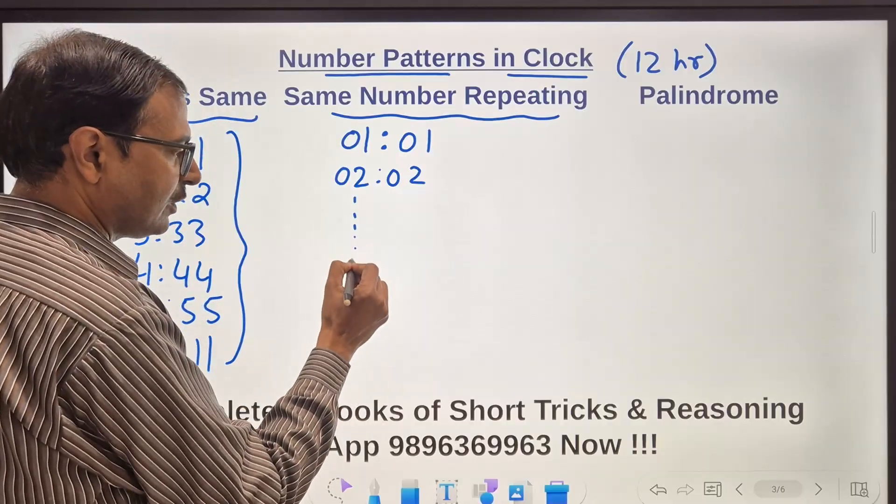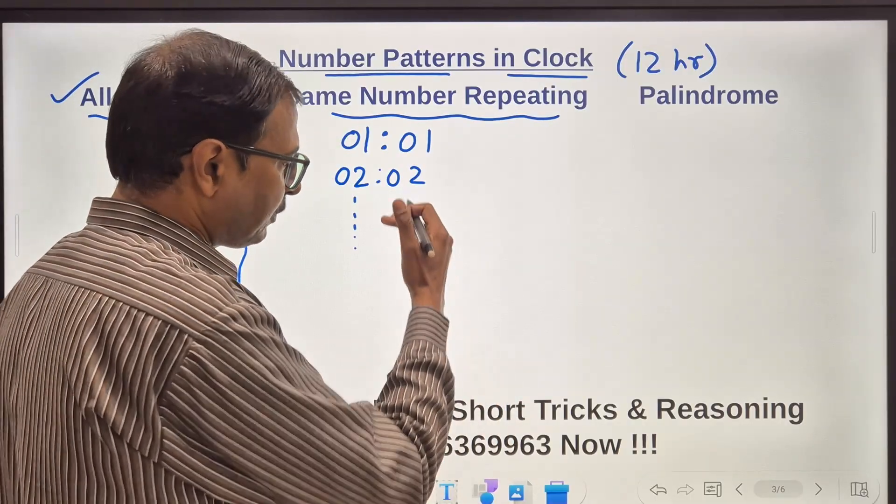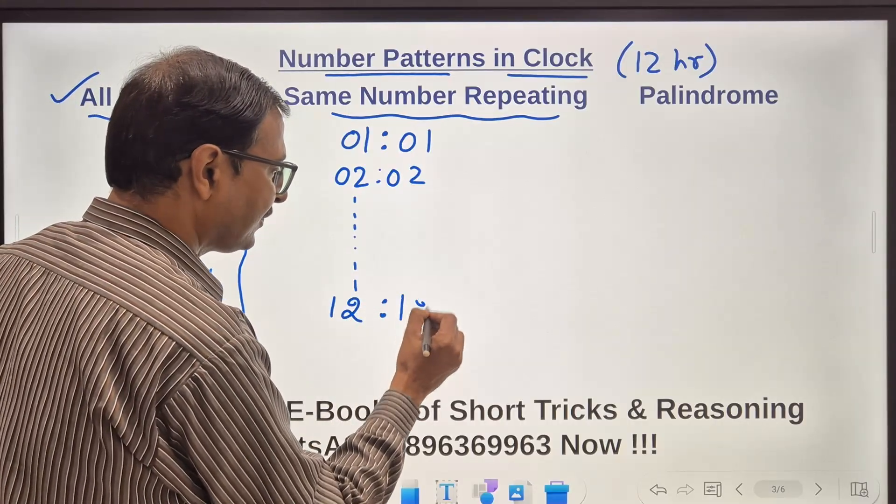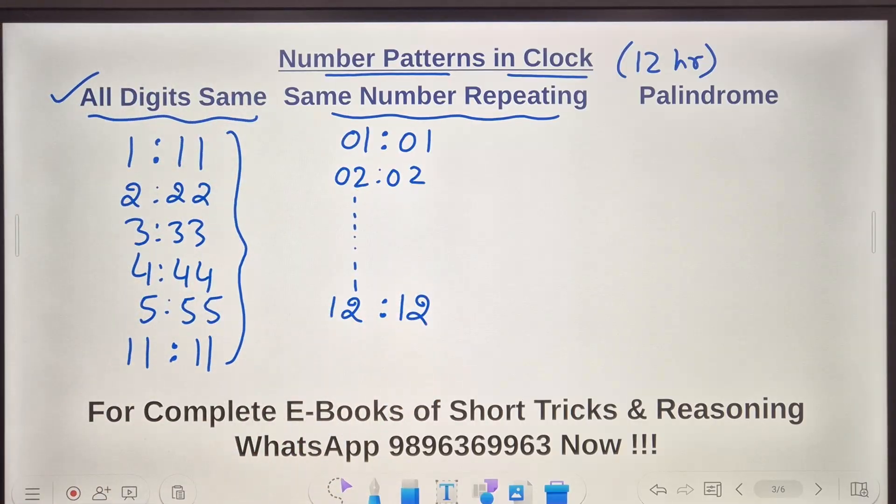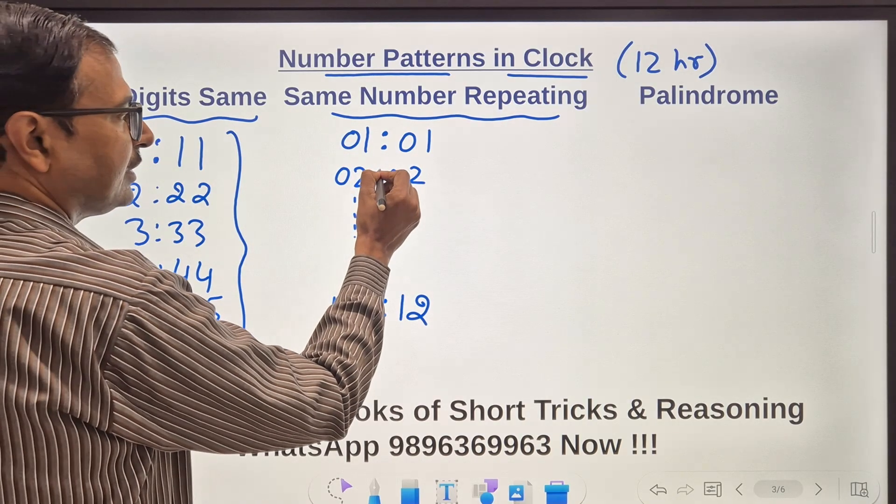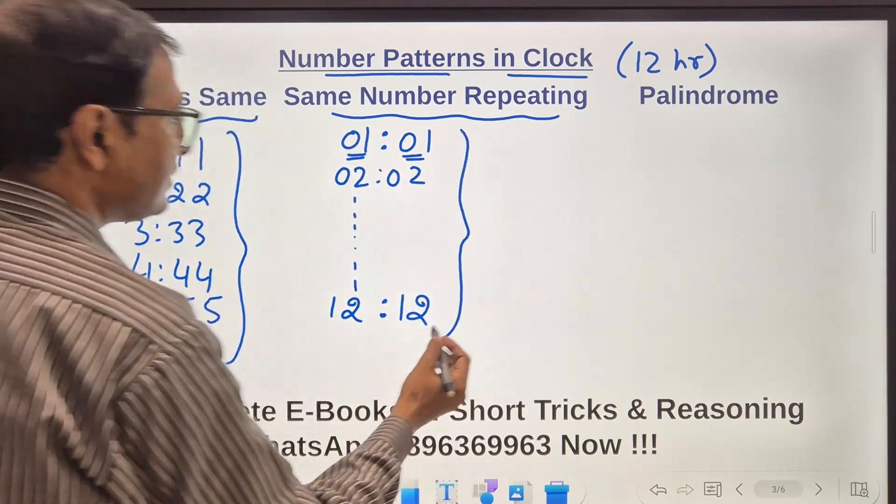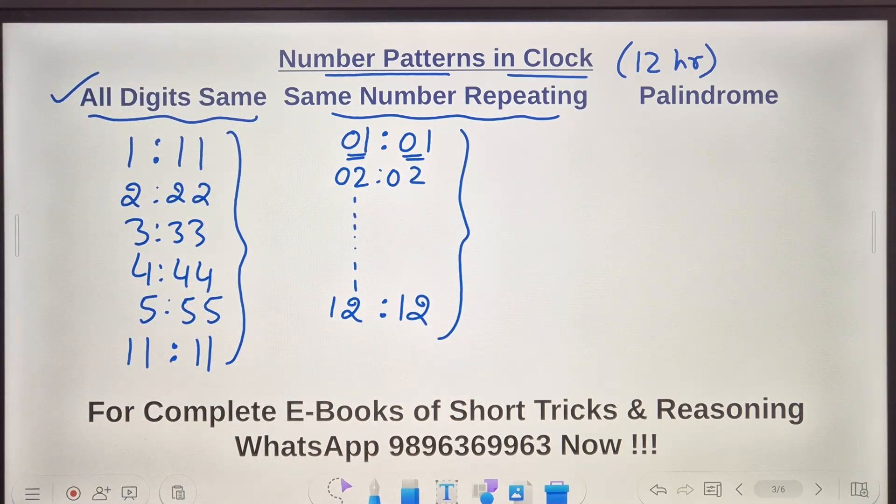05:05 up to 12:12. So how many times do you think we will get the same number in hours and in minutes? It is 12 times in a 12 hour period.